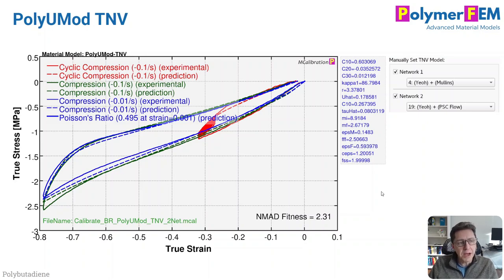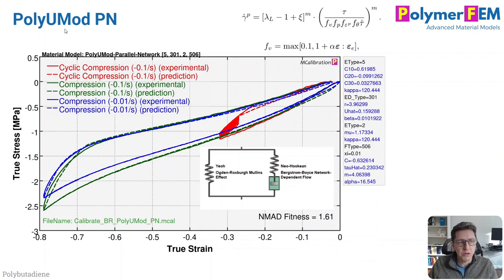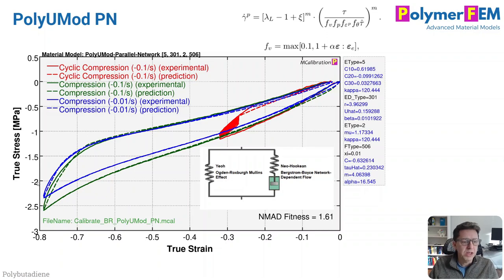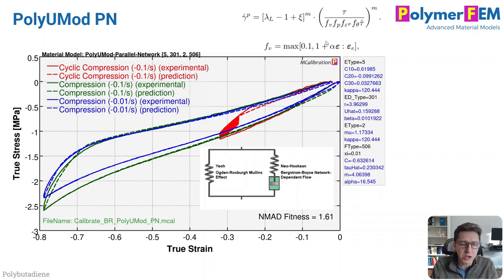But in order to really match this data, you would need to switch over to the PolyUMod Parallel Network (PN) model. The dashed lines are exactly right on for the two strain rates. This flow element is such that it can have a different strain rate dependence during loading versus unloading, and we get the unloading response as well. Error down to 1.6% — significantly better than any of the other models. The specific equations developed for this flow element are given here and discussed in more detail in the PolyUMod user's manual.